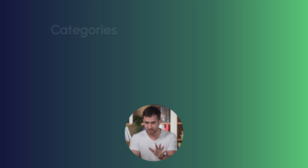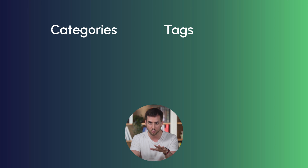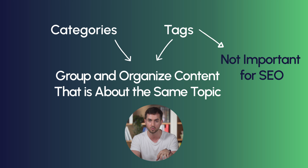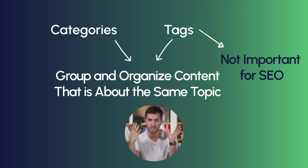Now let's talk about tags. Tags are very simple to understand — they're another way of organizing content on your website. The main difference is that tags don't play any role in helping you rank content on search engines, and they don't communicate to search engines what your content is about. Tags are just for you and your internal use only. I almost never — I'd say never — display tags on the front end of my website. I don't let visitors interact with my tags.